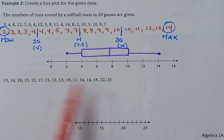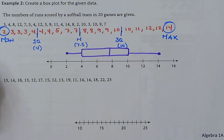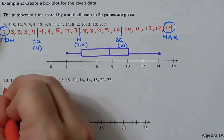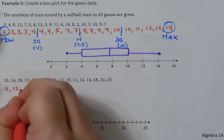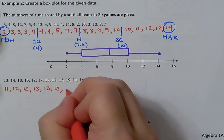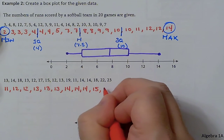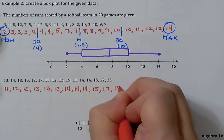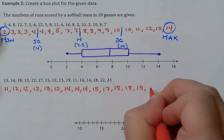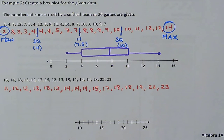For part B we have another list of numbers. We put them in order from least to greatest first: one 11, two 12s, three 13s, three 14s, one 15, one 17, two 18s, one 19, one 22, and one 23. Now we go through and find our five data points: minimum, first quartile, median, third quartile, and maximum.